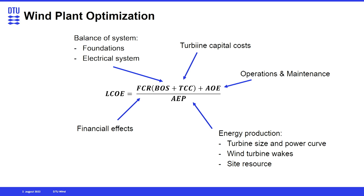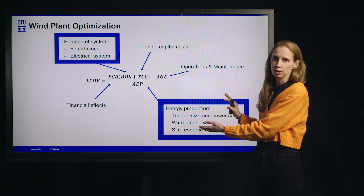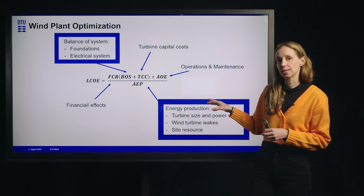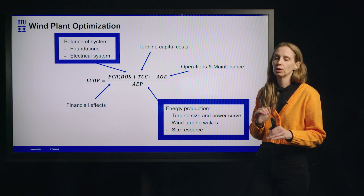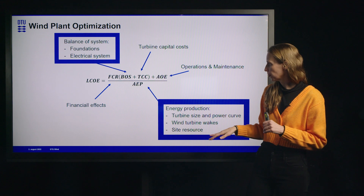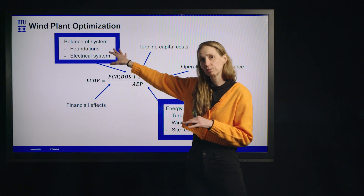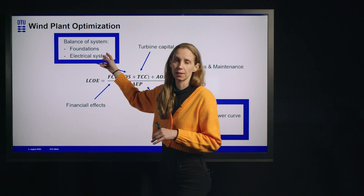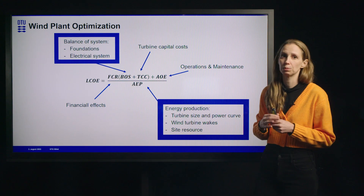In terms of farm design — looking at where we place the turbines and other factors — a couple of big factors influence LCOE: energy production and balance of system. We look at how to balance increasing energy production by selecting turbine types, placing turbines optimally, and managing turbine-to-turbine wake interactions. On the balance of system side, foundations are expensive especially offshore, as is the electrical system design where cables connecting turbines cost money.